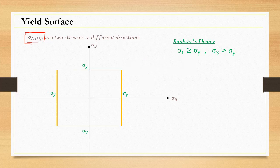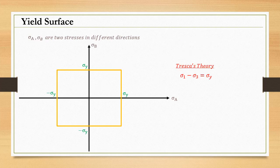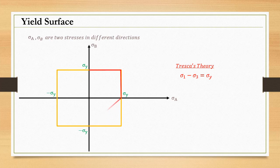Similarly, we can plot the yield surface for Tresca. The Tresca criterion is Sigma_1 − Sigma_3 = Sigma_Y. In the first quadrant, both Sigma_1 and Sigma_3 are positive. In the second quadrant, Sigma_3 becomes negative, which increases the quantity (Sigma_1 − Sigma_3). We can plot all four quadrants similarly. The resulting Tresca yield surface forms a hexagon.